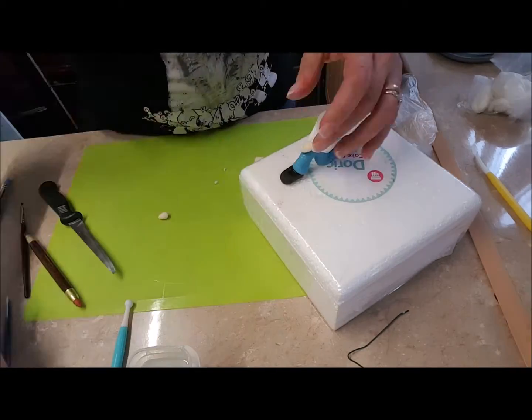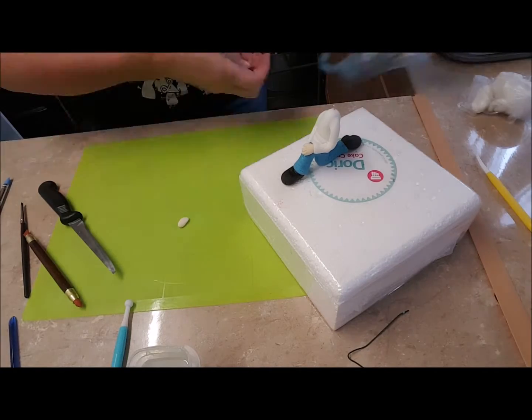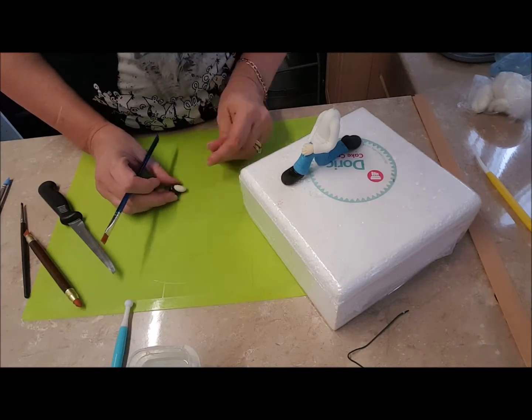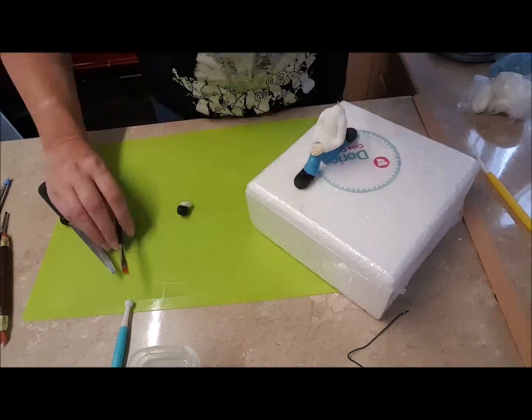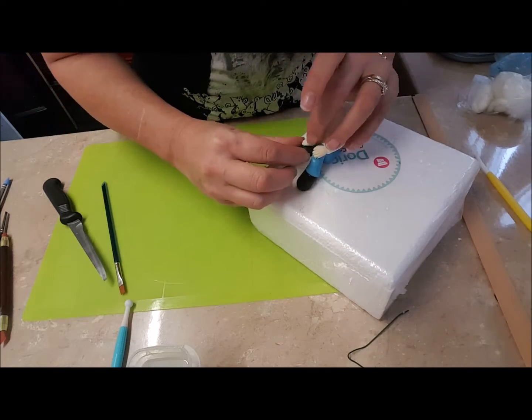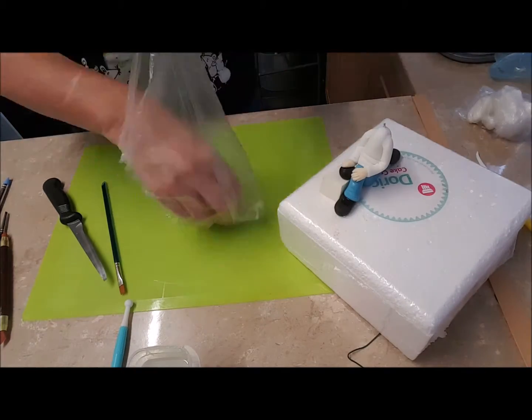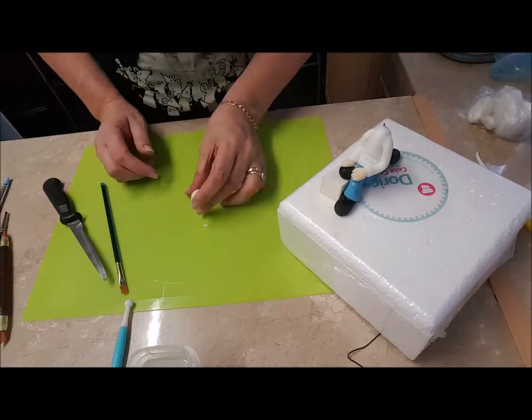This hand is just going to be resting on his knee. And this one I'm going to put the bowling ball onto it before I attach it to the arm. Put a bit of a cushion underneath to keep it upright and next it's the head.